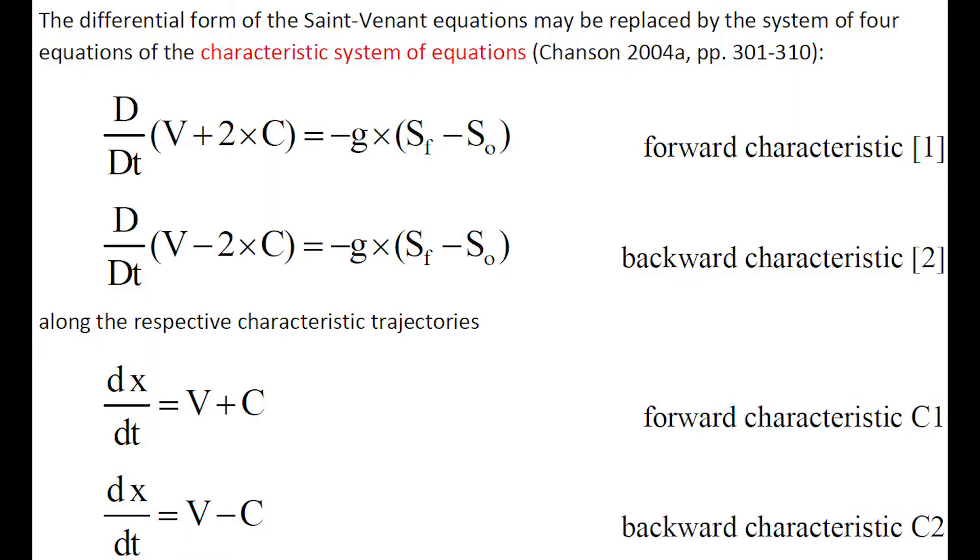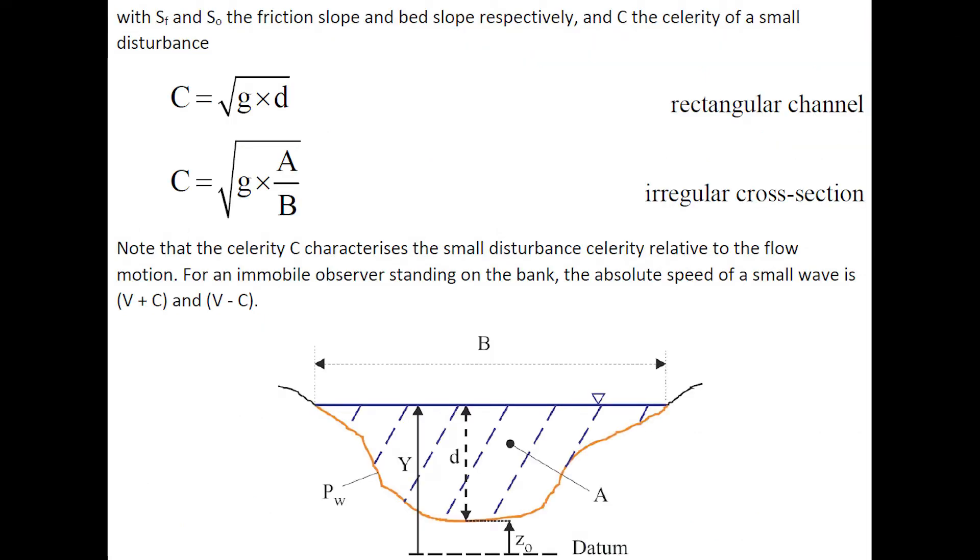The differential form of the Saint-Venant equations may be replaced by a characteristic system of equations, shown here, in which Sf is the friction slope, S0 is the bed slope, and C is the celerity of a small disturbance. C characterizes the relative celerity of the flow motion.